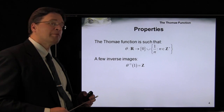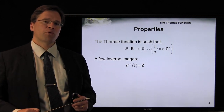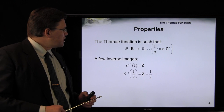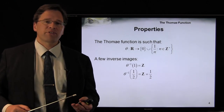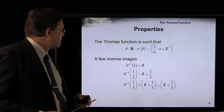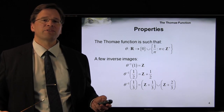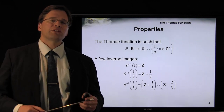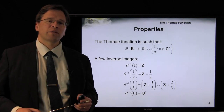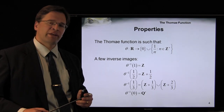Let's look at the inverse images. The inverse image of 1 is every single integer n, which can be represented as n over 1, with denominator 1, so the Thomae function gives 1 over 1, or 1. The inverse image of 1/2 is every value that maps onto 1/2: 1/2, 3/2, 5/2, negative 1/2 — essentially all integers plus 1/2. The inverse image of 1/3 includes values such as 1/3, 2/3, 4/3, 5/3, 7/3, 8/3, 10/3, and so on — all integers plus 1/3 together with all integers plus 2/3. The inverse image of 0 are all irrational numbers, since no rational number can map onto 0 because 1 over any positive denominator cannot be 0.